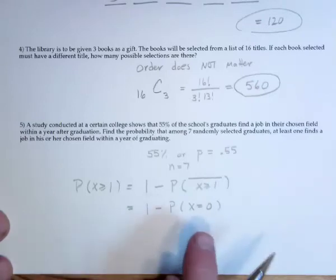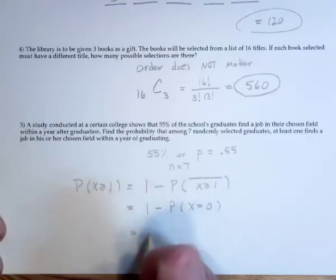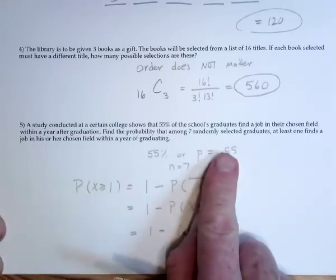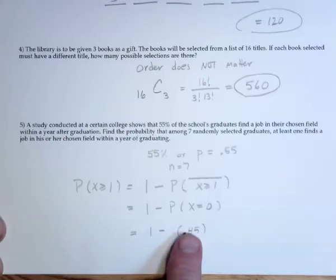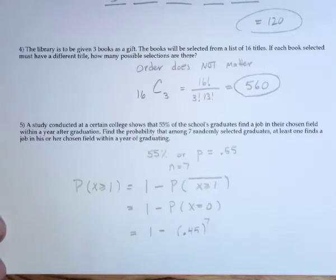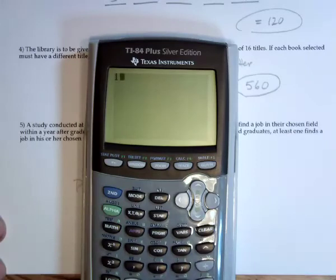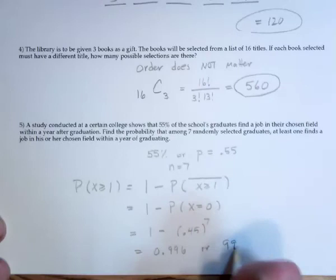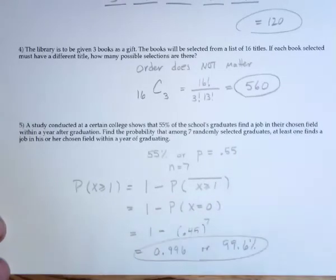Of the seven people, none of them are getting a job in their field. The chances of not getting a job in your field is the opposite of this, or one minus this. So 55% do get a job in their field, then 45% don't. It's actually none of them get a job, so all seven are not getting a job in their field. So one minus 0.45 raised to the seventh. That's a 99.6% chance that at least one person would get a job in their field.